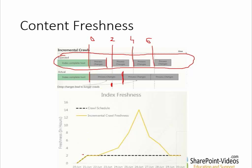With this incremental crawl, my expectation for content freshness is to get new or changed content crawled within a maximum of two hours, because I scheduled the crawl to run every two hours. But instead, the content freshness can be much worse because of that latency — the new incremental crawl process cannot start in time. This happens a lot, sometimes very extremely. Sometimes this curve is much more flat, and sometimes it goes even higher. It depends on the environment.